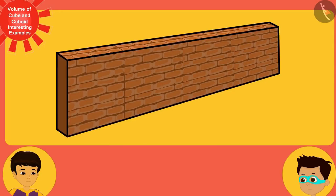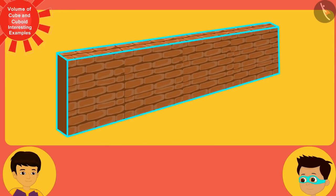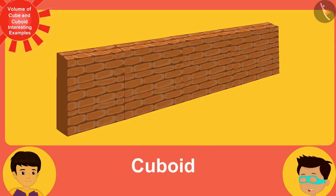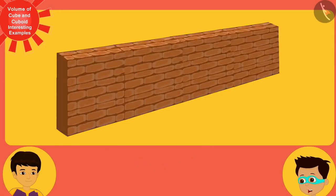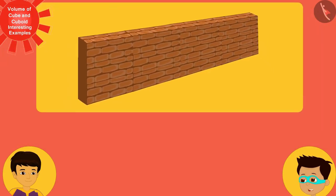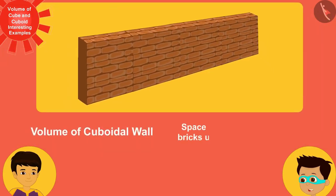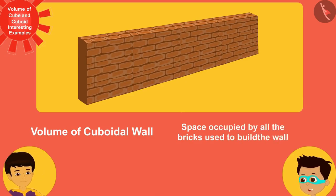Look, Manas, the wall is cuboid in shape and the space that is occupied by it — that is, the volume of this cuboid — is equal to the space occupied by all the bricks. So, let's first find the volume of the wall.